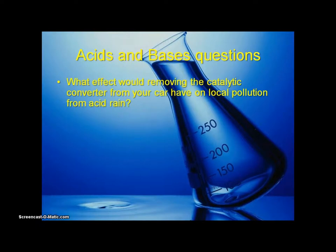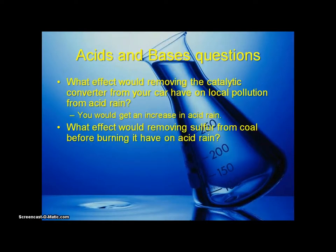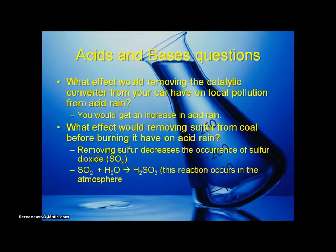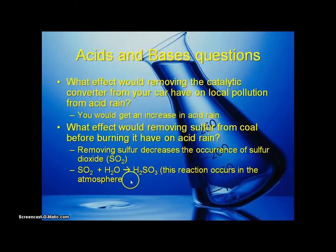What effect would removing the catalytic converter from your car have on local pollution and acid rain? You would get an increase in acid rain. What effect would removing sulfur from coal before burning it have on acid rain? Removing sulfur decreases the occurrence of sulfur dioxide. Sulfur dioxide reacts with atmospheric water to form aqueous H₂SO₃, which falls to Earth as acid rain — this whole reaction occurs in the atmosphere.